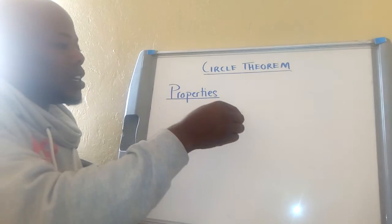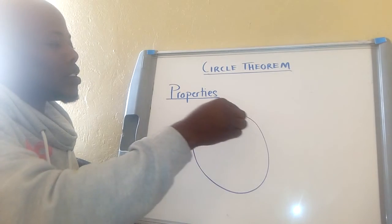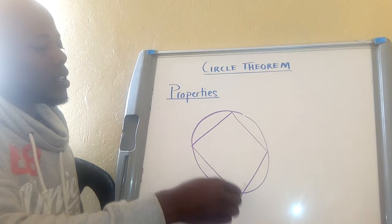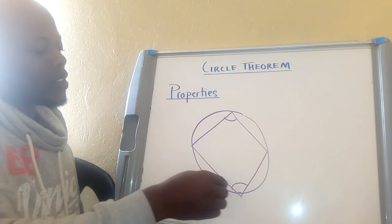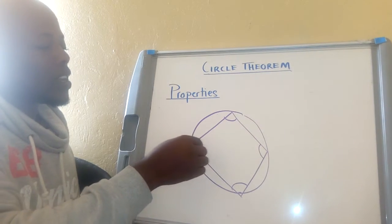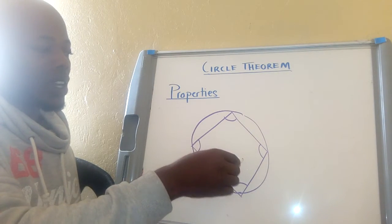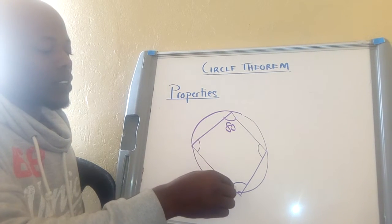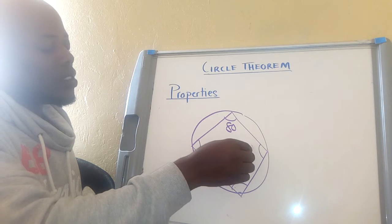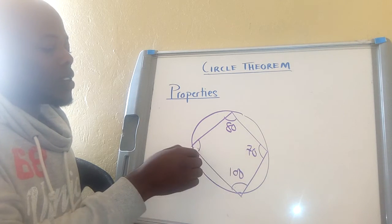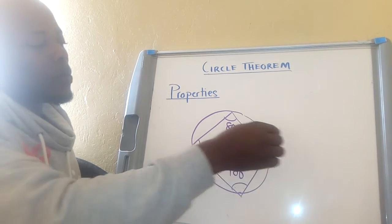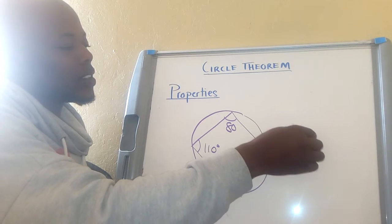The next property: if you have a circle with a quadrilateral shape inside it, the opposite angles add up to 180 degrees. This angle and this opposite angle add up to 180 degrees. If one angle is 80 degrees, the opposite must be 100 degrees. If one is 70 degrees, the opposite must be 110 degrees, such that all four angles add up to 360 degrees.